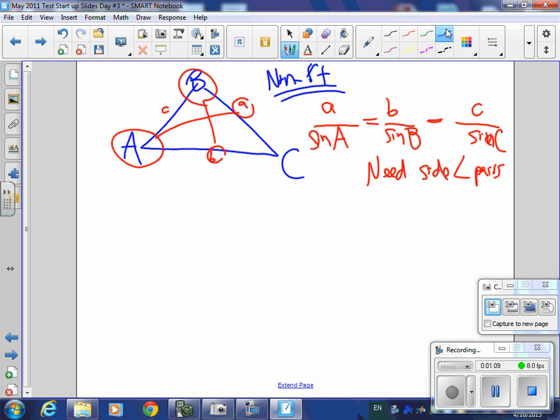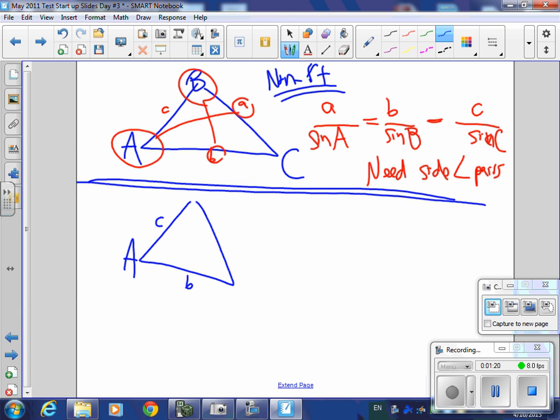The other one that we had was law of cosines, and we use that one when we have things like C, B, and an angle A, and notice that we don't know any side angle pairs.